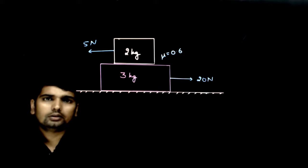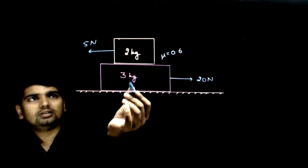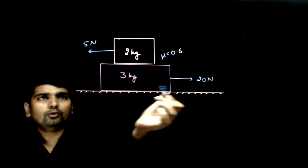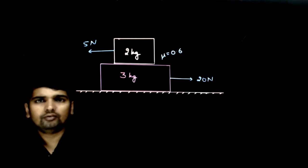This is a simple two-block problem where the lower block has mass 3 kg, the upper block has mass 2 kg. This force is 20 N. On the other side, this force is 5 N.